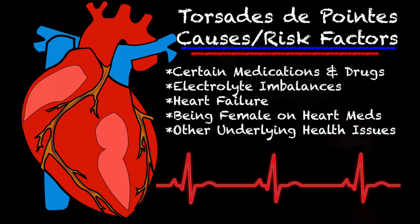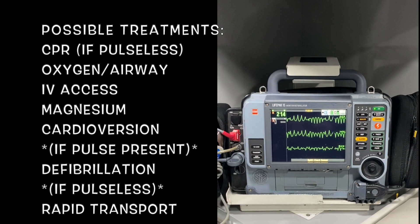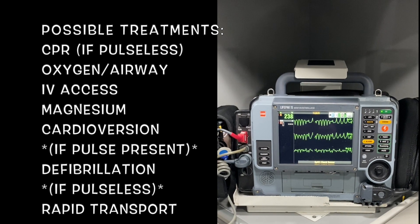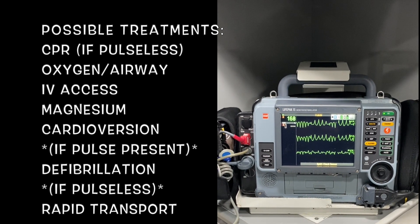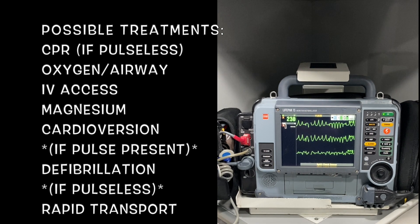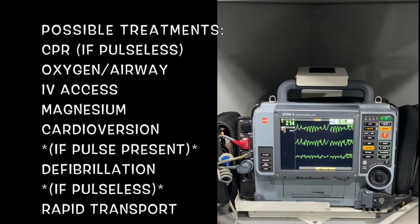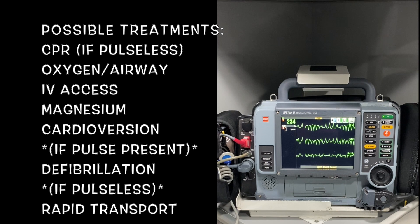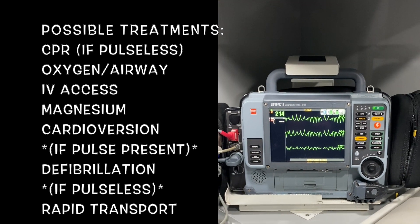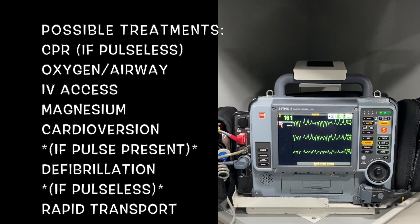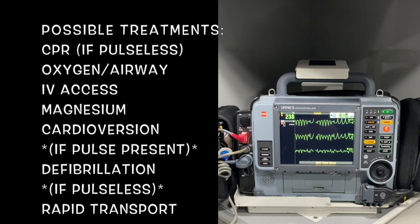The last cause is other underlying health issues. So how would we as EMS providers treat torsades? It all depends on two things. Just like with monomorphic ventricular tachycardia, we have to ask ourselves: does the patient have a pulse or are they pulseless? If the patient is pulseless, we want to work this just like we would a cardiac arrest — CPR, oxygen, airway, IV access, and defibrillation. The only thing that would be different is that we would give magnesium.